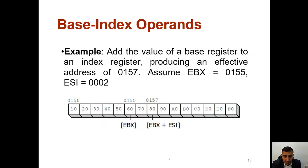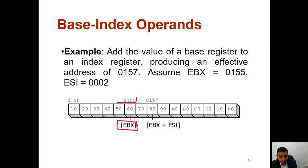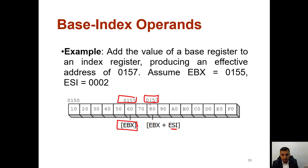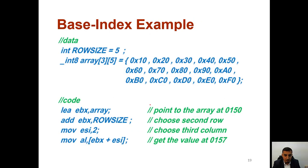The base-index addressing mode adds the value of a base register to an index register to produce an effective address. For example, if EBX is 155 and ESI is 2, the effective address is 157. This helps you move around in an array while keeping the base register holding the row start address, instead of continuously adding numbers directly to the base register.